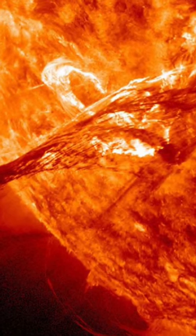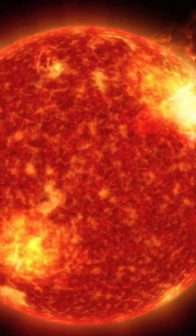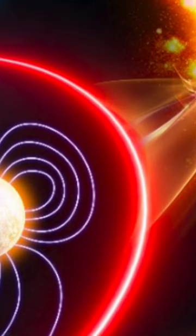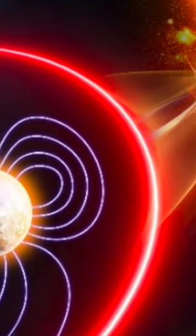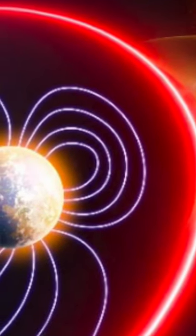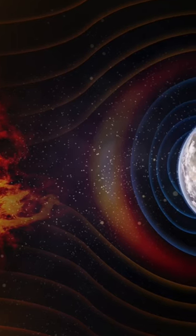When huge amounts of charged solar particles reach our planet, the interactions of these particles with Earth's upper atmosphere cause the atmosphere to swell. When that happens, the density of gases at higher altitudes increases and spacecraft experience more drag.